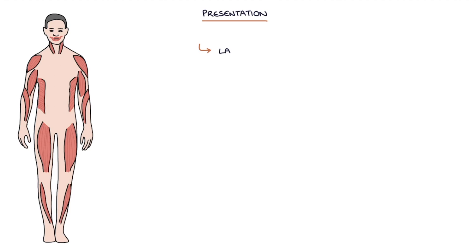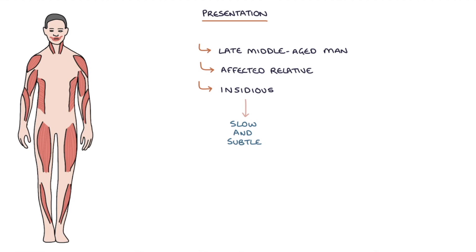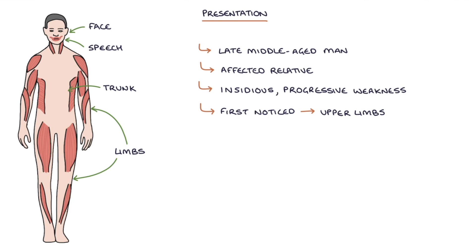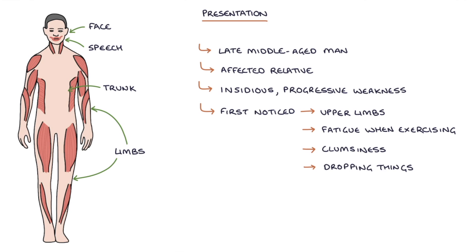The typical patient is a late middle-aged — for example, 60 years old — man, possibly with an affected relative. There is an insidious, meaning slow and subtle, progressive weakness of the muscles throughout the body, affecting the limbs, trunk, face, and speech. The weakness is often first noticed in the upper limbs. There may be increased fatigue when exercising, and patients may complain about clumsiness, dropping things more often, or tripping over.